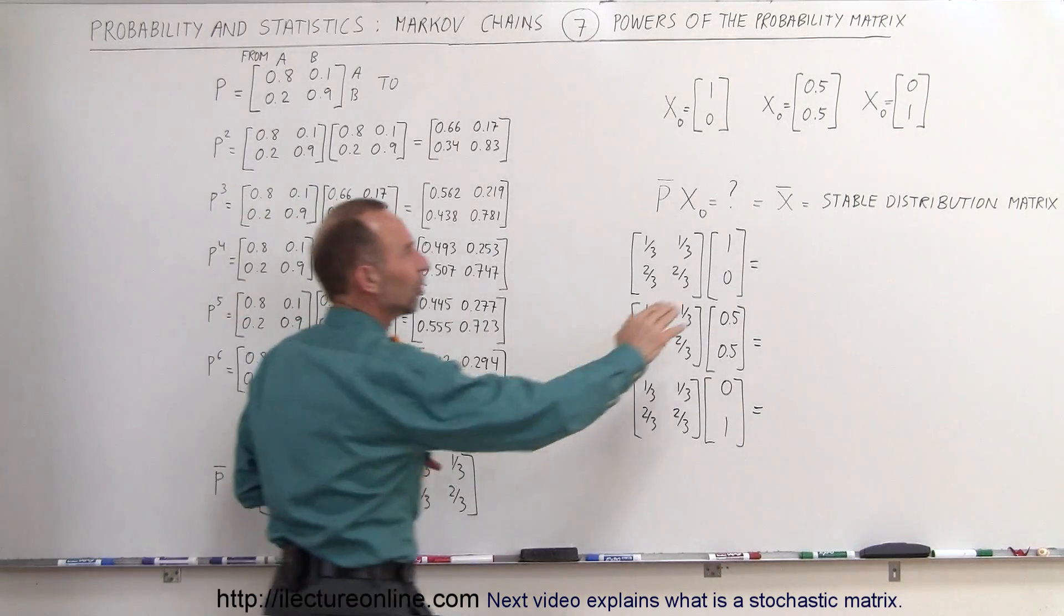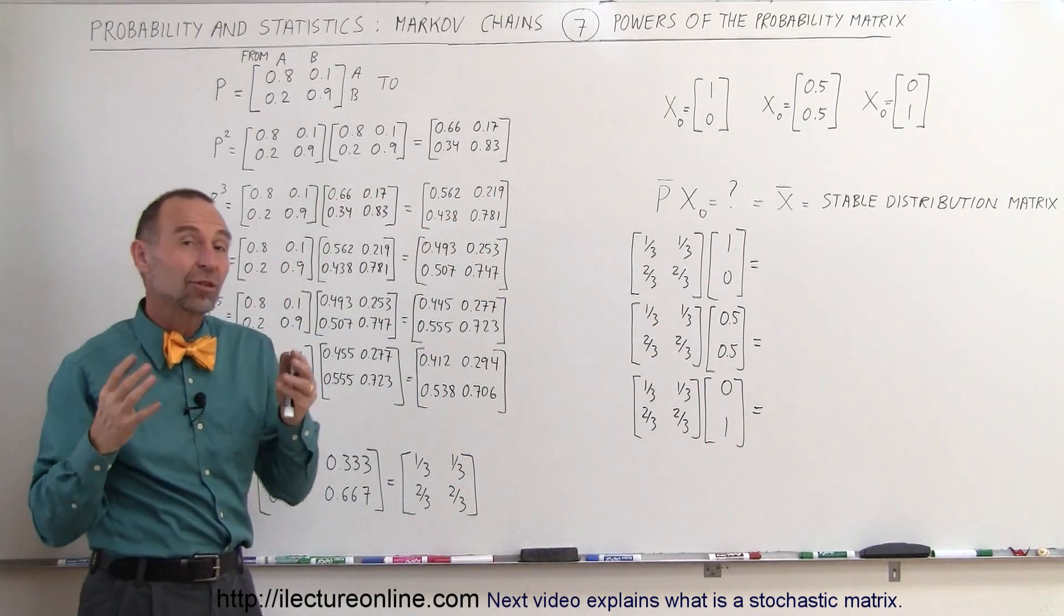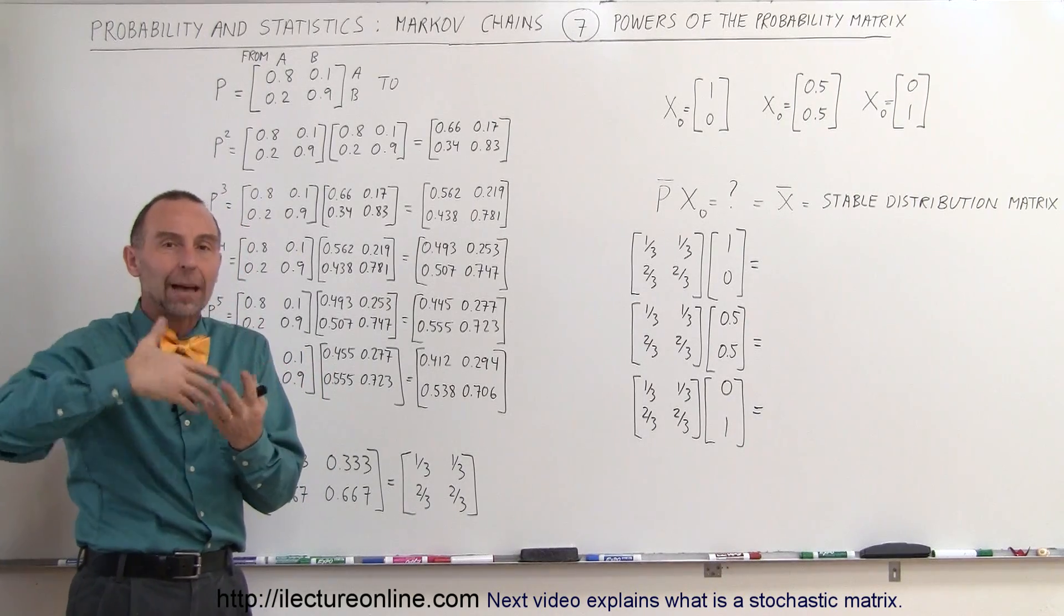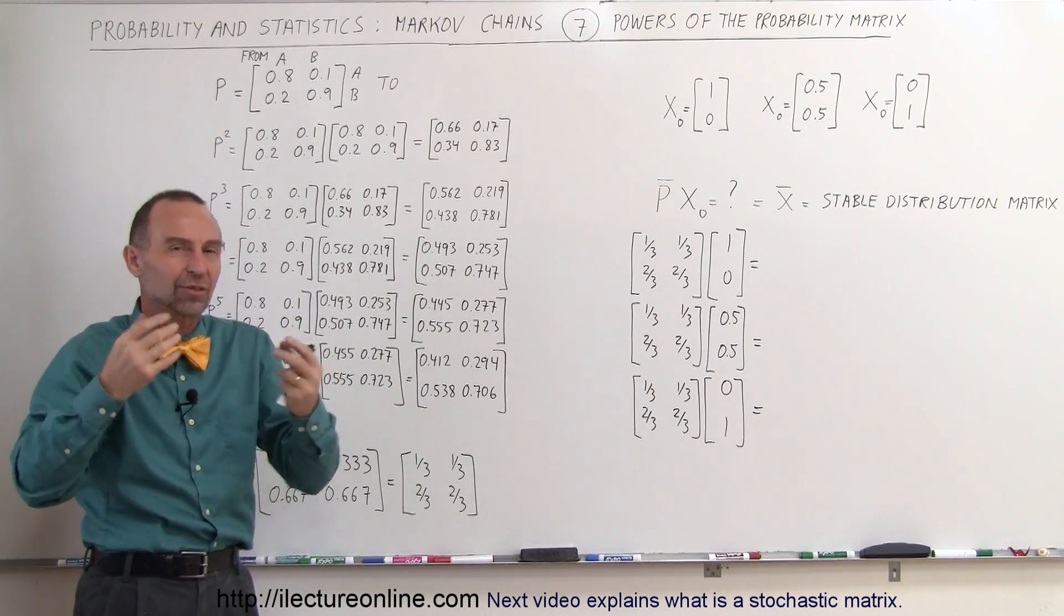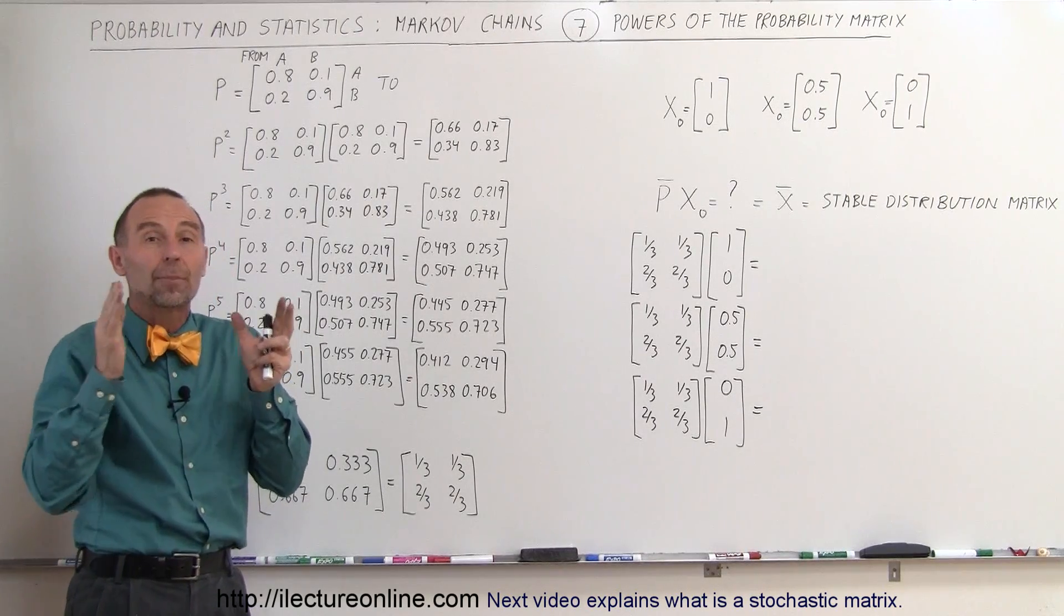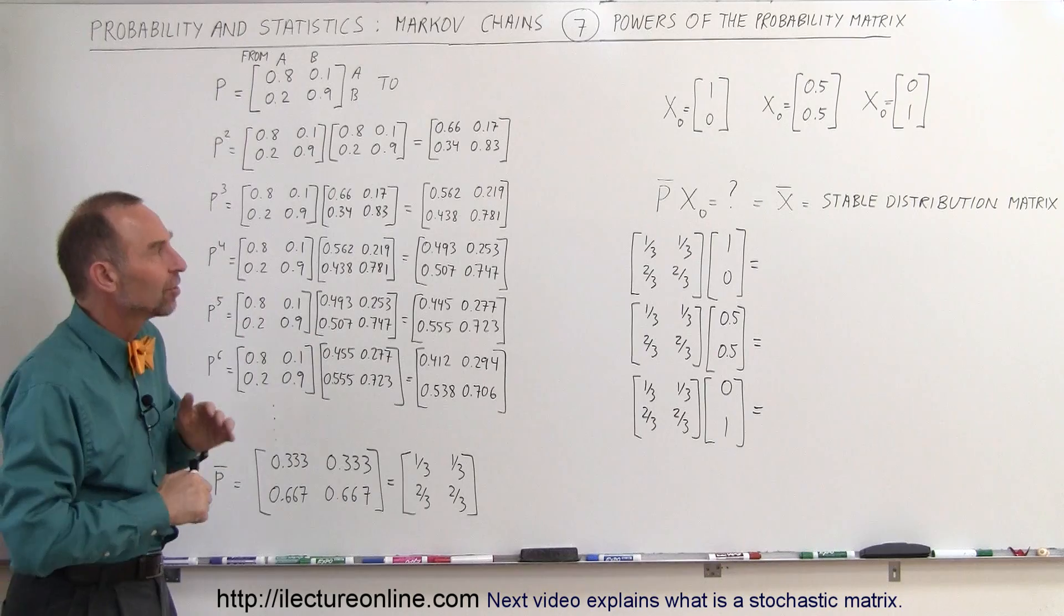So actually, what will the end state be? Starting with some initial state and starting with some probability matrix that describes what's happening in the market, or what's happening in nature, what's happening with the thing that we're looking at, we should end up being able to come up with the final state of the system.